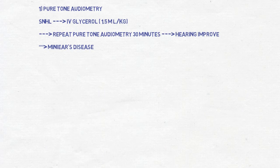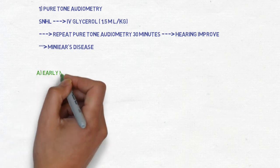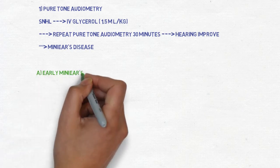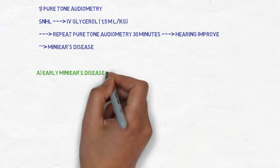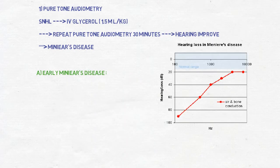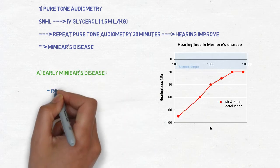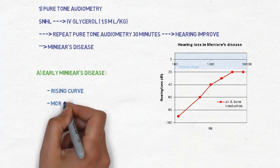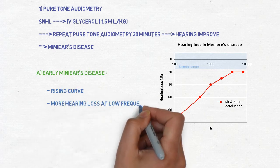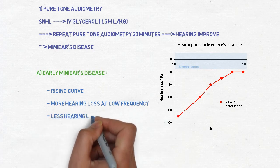In pure tone audiometry what happens in early Meniere's disease? So look at this diagram. There is a rising curve. And the interpretations are more hearing loss at low frequency and less hearing loss at high frequency.